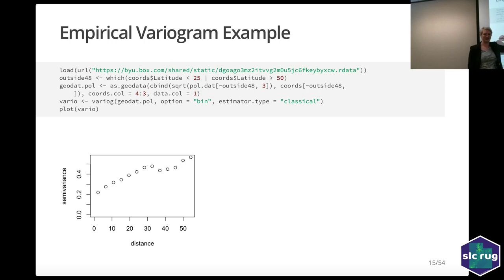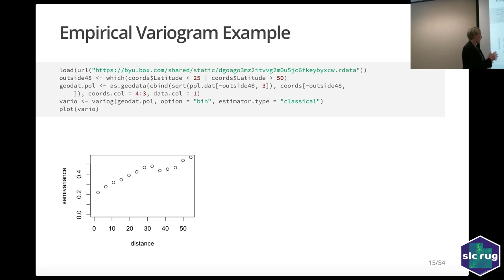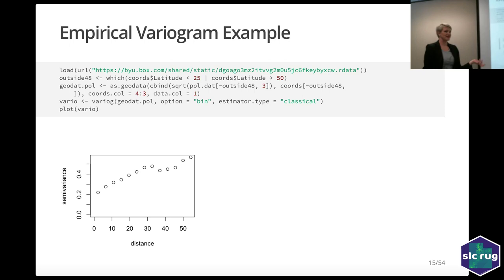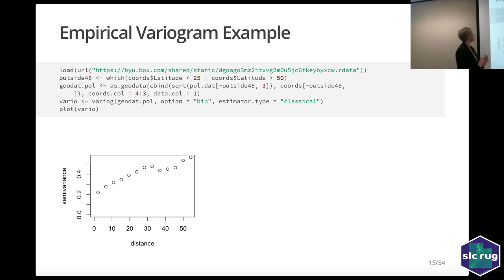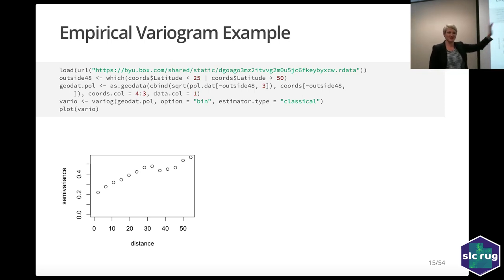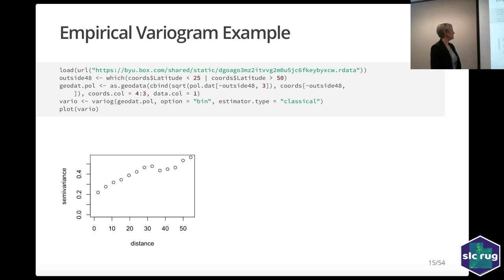The variog option 'bin' says I'm binning those distances — taking the average of all locations that are H distance apart, and doing that for a lot of different distances. The estimator type 'classical' is one of a couple options — Noel Cressie, one of the two big spatial statistics guys, wrote the book on classical spatial statistics. I tried both estimators for this data and they looked very similar, so I stuck with classical. With a couple thousand data points, it doesn't much matter.